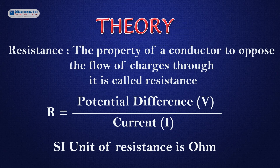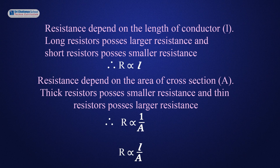The theory of this experiment is resistance. The property of a conductor to oppose the flow of charges through it is called resistance. R is equal to potential difference V divided by current I. The SI unit of resistance is Ohm. Resistance depends on the length of the conductor — long resistors possess larger resistance and short resistors possess smaller resistance. Therefore, R is directly proportional to L.